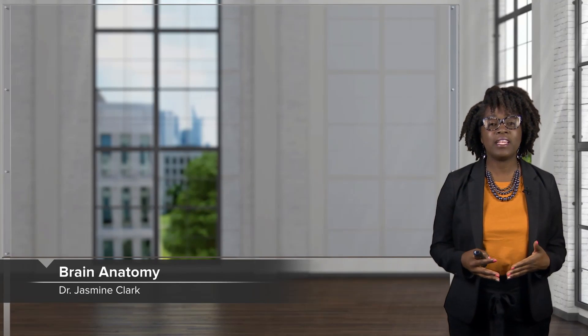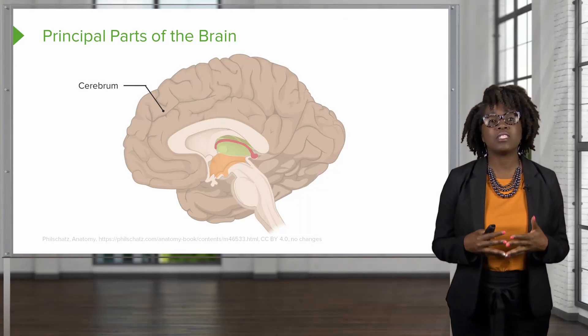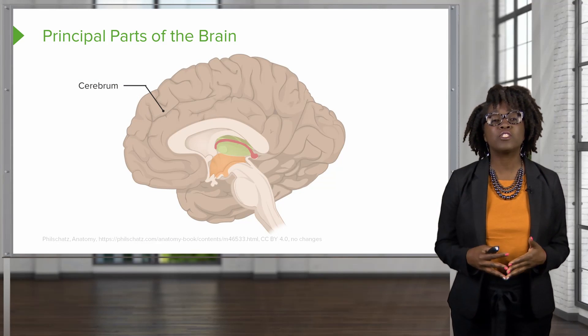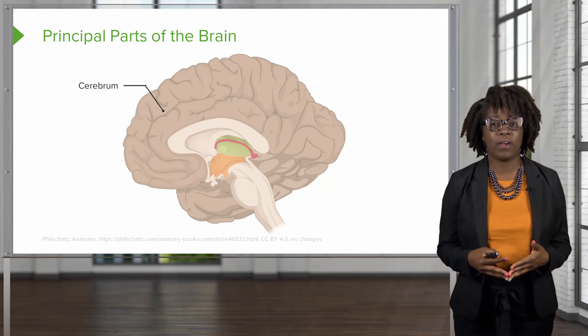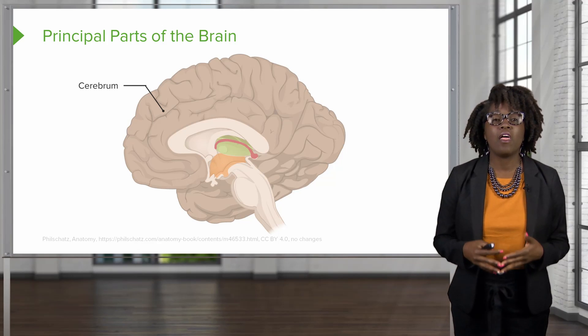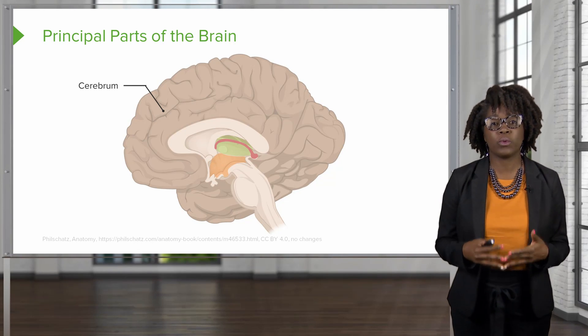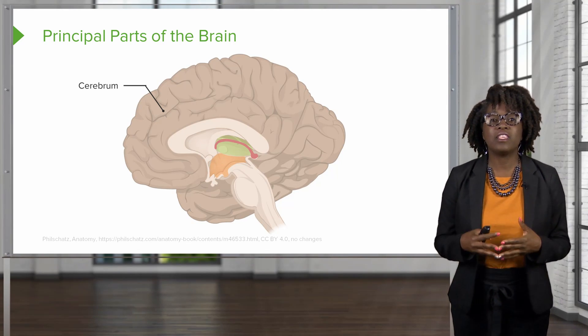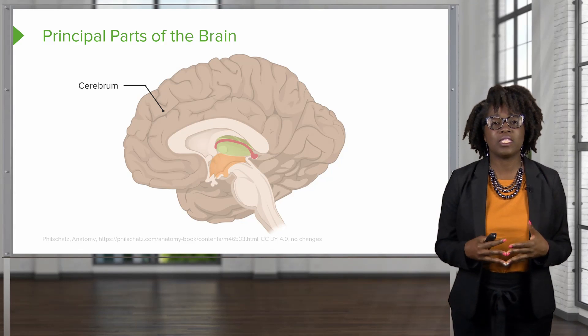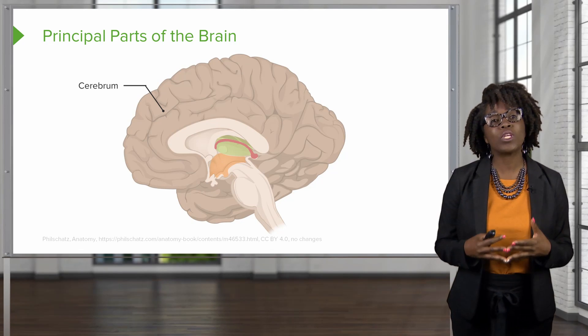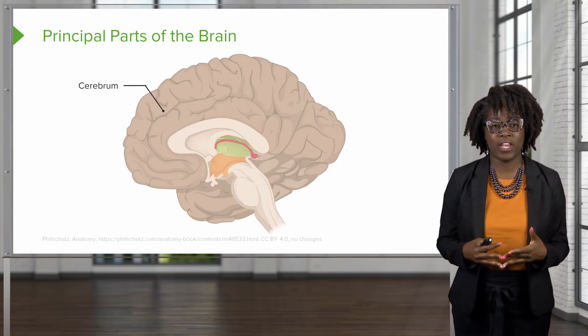Welcome. In this lecture we will talk about the brain and the cranial nerves. First, let's look at the principal parts of the brain. The outermost part of the brain is known as the cerebrum. This is what you would see if you were holding the brain in your hand.